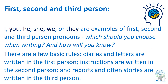First, second, and third person — I, you, he, she, we, or they — are examples of first, second, and third person pronouns. Which should you use when writing, and how will you know? Often you do it without thinking when you speak, but in writing you can get in a little bit of a muddle. There are a few basic rules: diaries and letters are written in the first person; instructions are written in the second person; and reports and often stories are written in the third person.